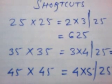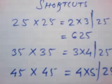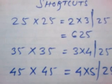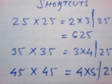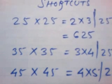At the back, we have to write directly 25. We have to see the tens digit, that is 2. 2 and the next successor is 3. 2 into 3 is 6. Directly we'll place 6, 25.